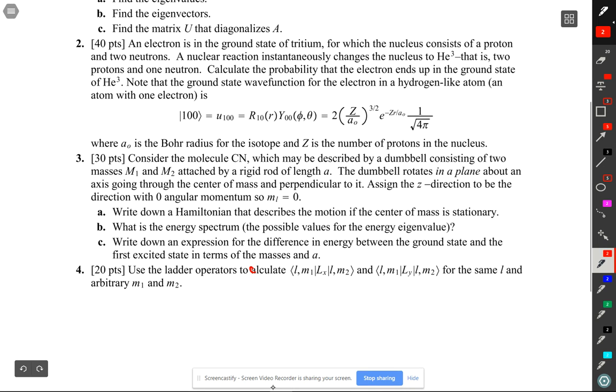So number two, this here is the ground state wave function for a hydrogen-like atom, which means anything with one electron, and Z is the number of protons in the nucleus. So for helium, you have two protons in the nucleus, so Z is two. For hydrogen, Z is one.